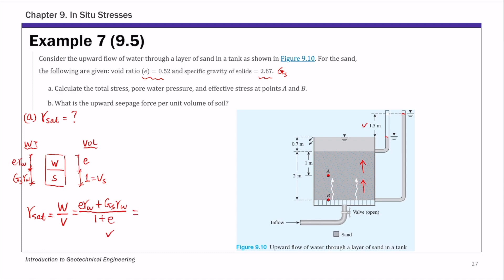Substituting e = 0.25 and Gs = 2.67, we get the saturated unit weight of 20.59 kilonewtons per meter cubed.